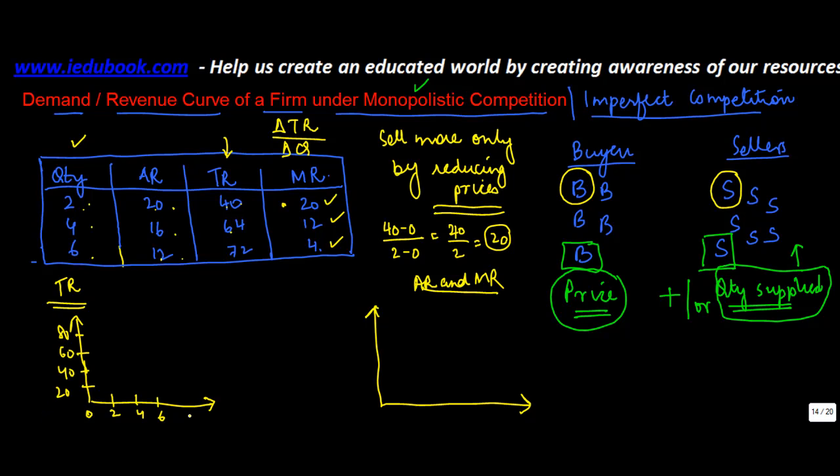Now, this axis represents the quantity. When the quantity is 2, the total revenue is 40. When the quantity is 4, the total revenue is 64, which should be somewhere here.